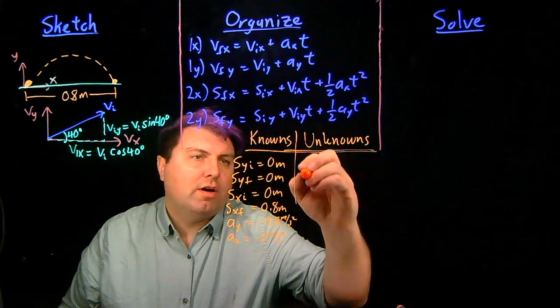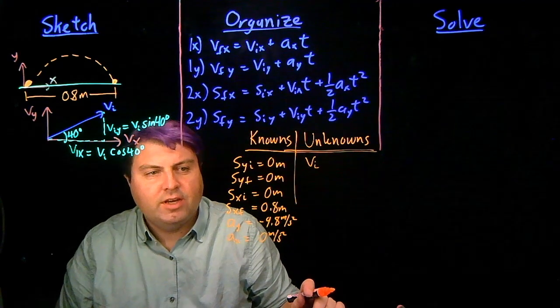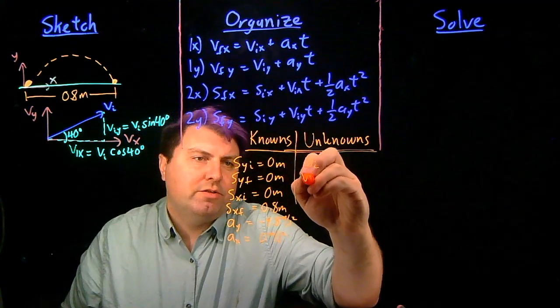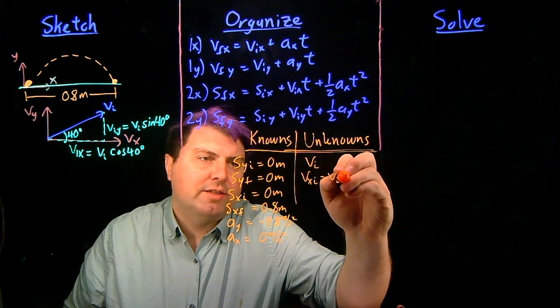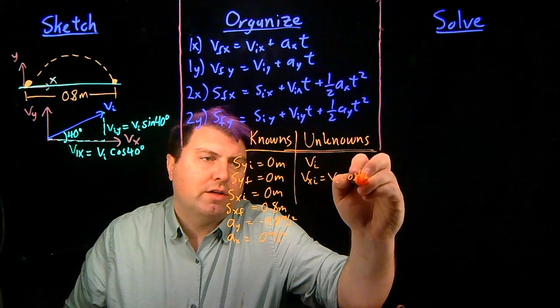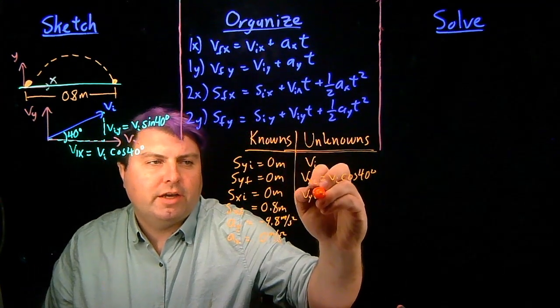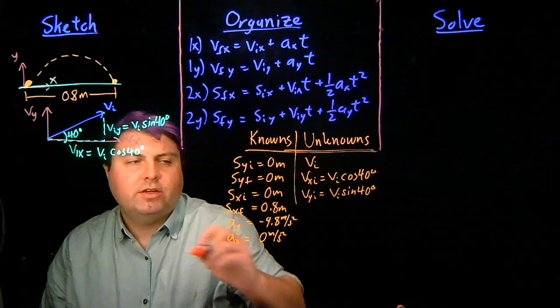We don't know our initial velocity vi, and whether we want to put it in knowns or unknowns, we can choose, but our vxi we can write in terms of vi, it's going to be vi cosine of 40 degrees, as we've shown over here, and our vyi, vi sine of 40 degrees, as we've shown here.